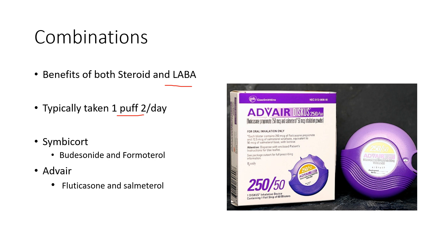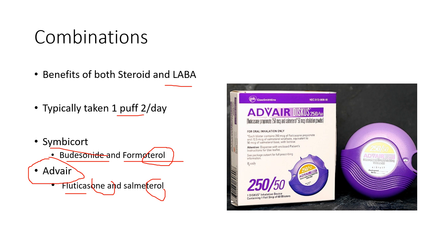So Symbicort is one you might see, with budesonide and formoterol — again, anything with a beta agonist suffix. It's fluticasone, '-sone,' and another option is formoterol, or Spiriva. ADVAIR is probably one of the more common ones you might see. It's a DPI, not a metered dose inhaler — it doesn't have a propellant; they have to draw it in with a very vigorous breath in.